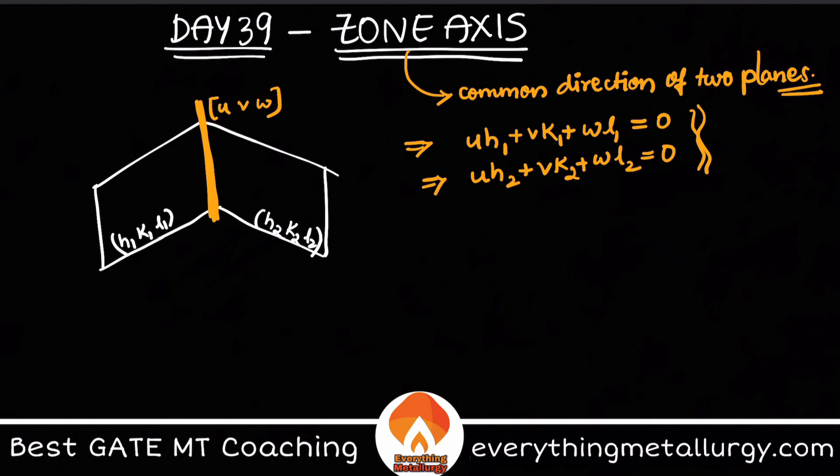So these are some conditions. Basically we know what are the different conditions right for any direction to lie in a plane, so using that you can verify this directly using these two conditions. Now if you want an exact value, if you want a procedure to calculate, then let's say these are the planes, these are the normal plane normals.